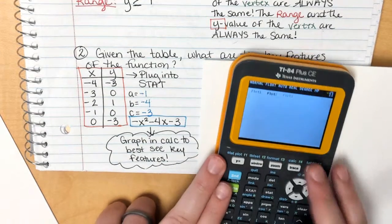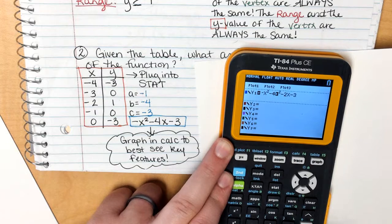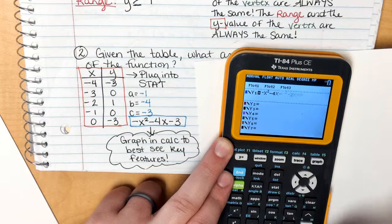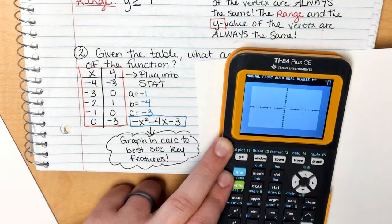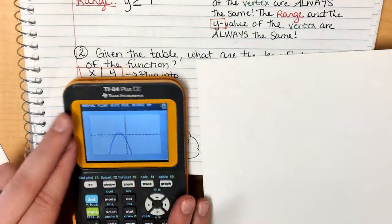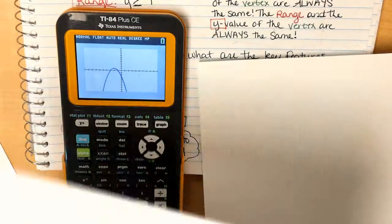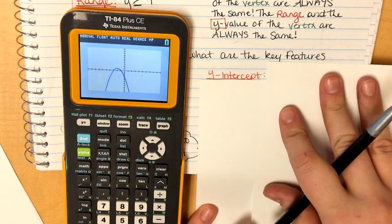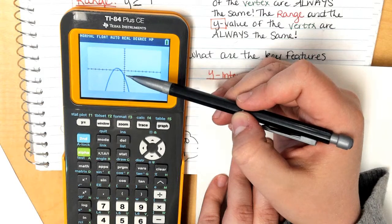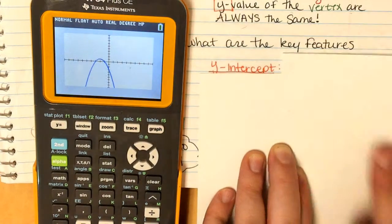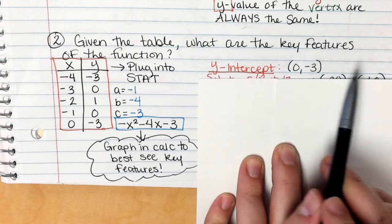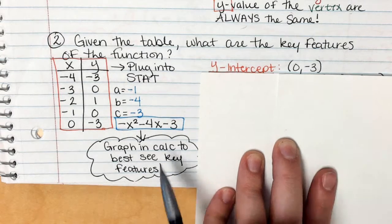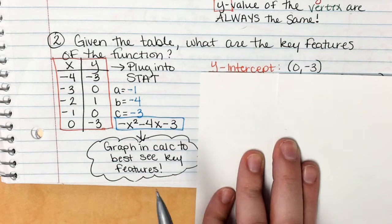Graph the equation negative x squared minus 4x minus 3 in Y=. The y-intercept is where it crosses the y-axis, which is at −3, written as (0, −3). Notice this matches the C value in standard form — the constant term always equals the y-intercept.